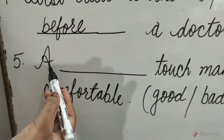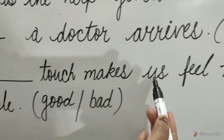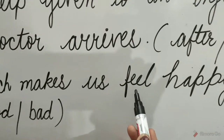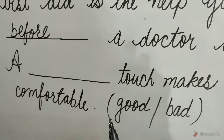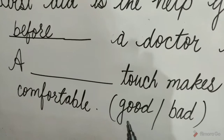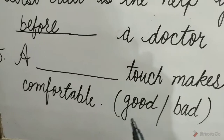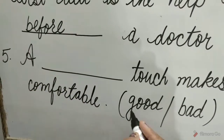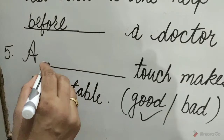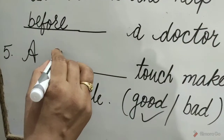Question 5: A blank touch makes us feel happy, safe and comfortable. The options are good, oblique, bad. The good option is correct. So tick on good and write here: good. A good touch makes us feel happy, safe and comfortable.